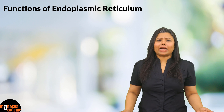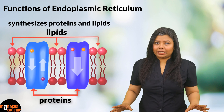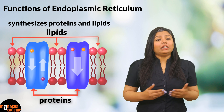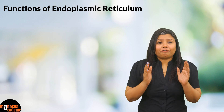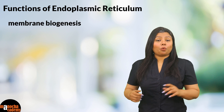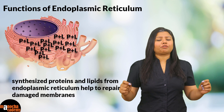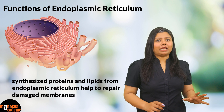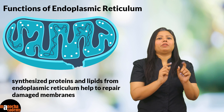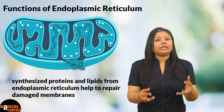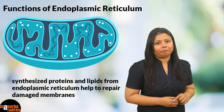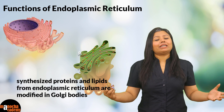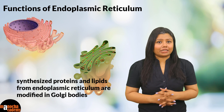To sum up, the endoplasmic reticulum is the site for synthesis of all proteins and lipids. These proteins can be structural or functional proteins like enzymes and hormones — including lipid-based hormones. The final function is membrane biogenesis: the proteins and lipids produced by the ER can be used to synthesize or repair the cell membrane or any unit membrane in the cell. During cell division, large numbers of proteins and lipids are formed from the ER and modified in the Golgi body to form new cell membranes in daughter cells, especially in plants.